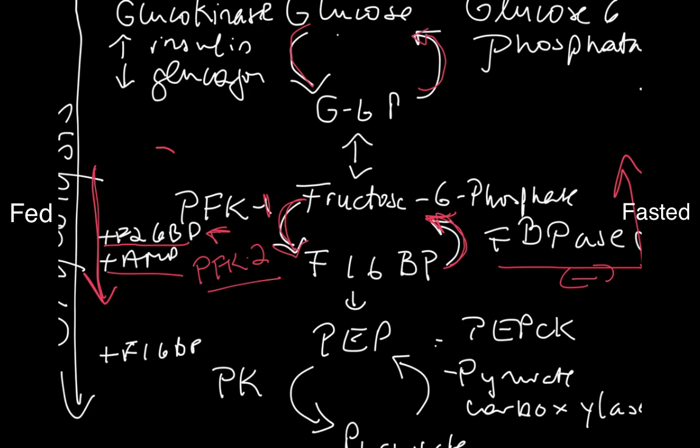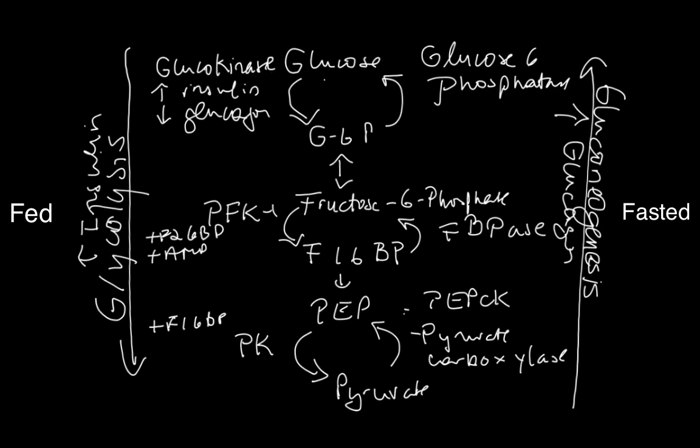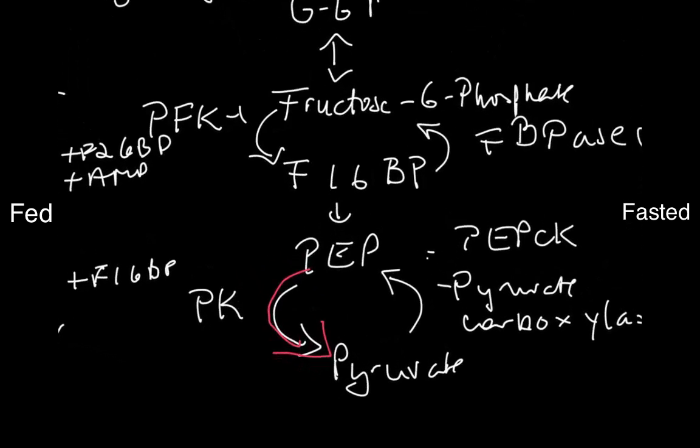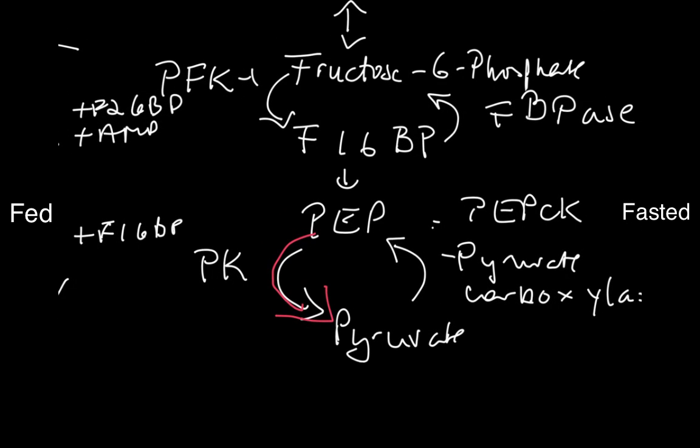The last futile cycle is the conversion of phosphoenolpyruvate to pyruvate. In the fed state, this is regulated by the metabolite further upstream that was just generated - fructose 1,6-bisphosphate. This is a positive allosteric regulator of pyruvate kinase, which is an irreversible enzyme.